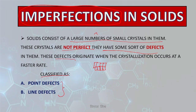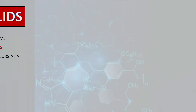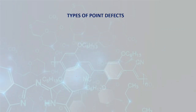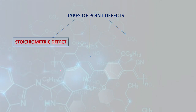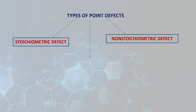Defects are mainly classified as point defects and line defects. If a defect is found only at a point, it is known as a point defect; if it occurs along a line, it is known as a line defect. We will be studying the types of point defects today, as the line defect is kept out of the syllabus for the current Class 12 book. There are basically three classifications for point defects: stoichiometric defect, non-stoichiometric defect, and impurity defect.